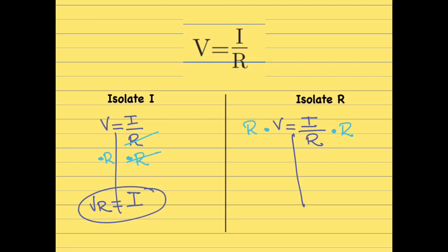So R times V, RV equals R dividing and R multiplying, they cancel. And all that I have left is the I. So after that, I just need to leave the R alone. And how would I do that? I need to cancel the V.